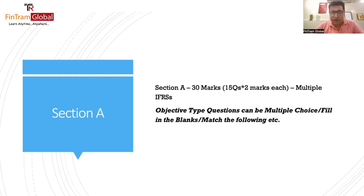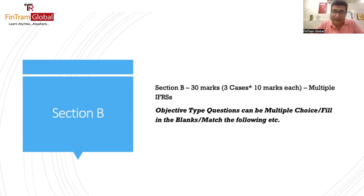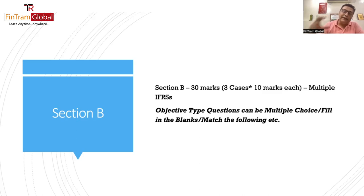Objective type questions can be multiple choice, fill in the blanks, match the following — 15 questions, two marks each, giving 30 marks in section A. In section B, you have 30 marks again — three cases having 10 marks each, with five questions per case, also two marks each. So effectively 15 questions giving you 30 marks for the three cases. You may get multiple choice, fill in the blanks, or match the following depending on what the examiner wants to ask, but each set of five questions will be based on one specific case.